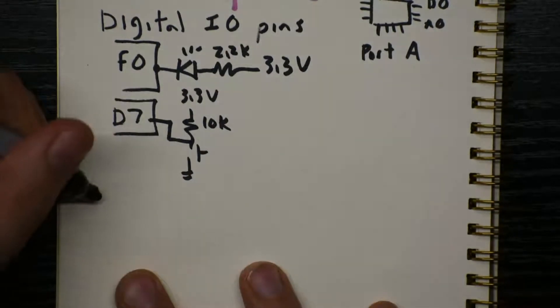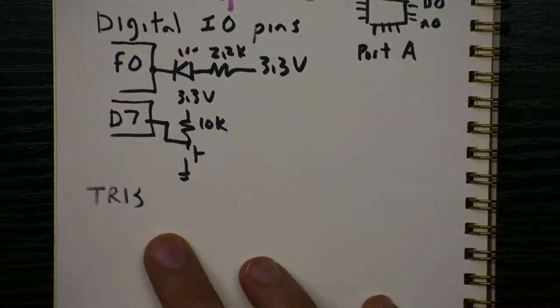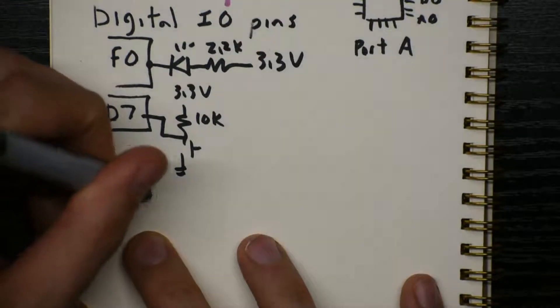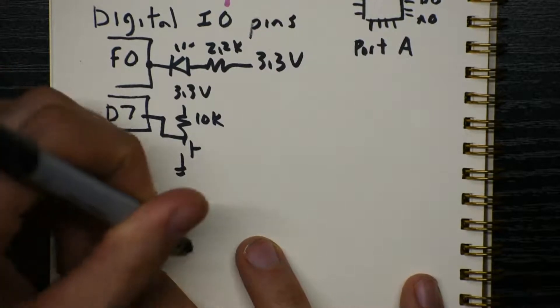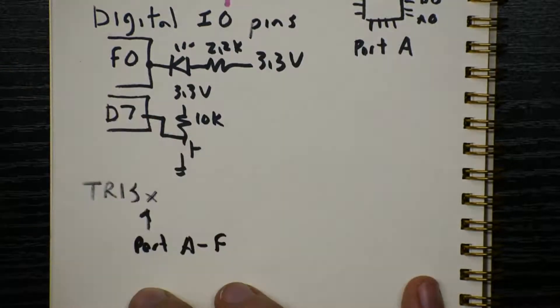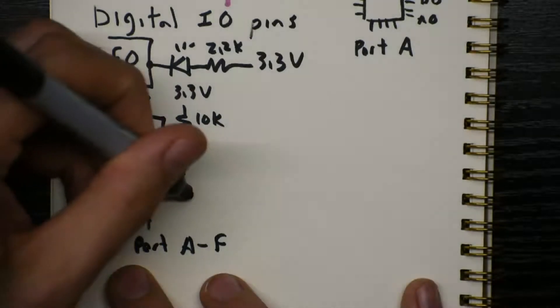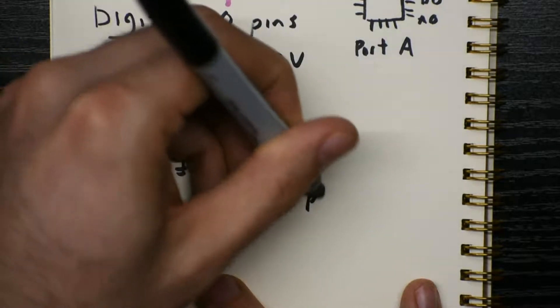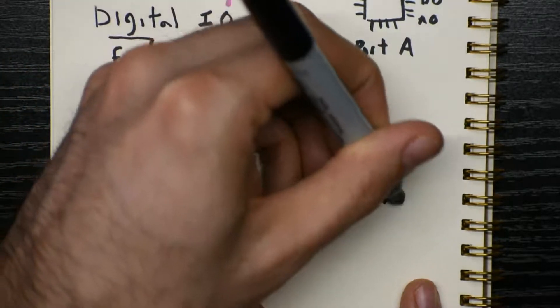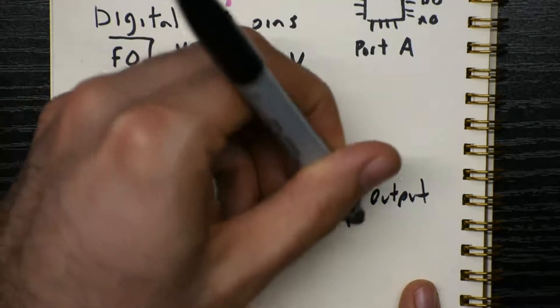The change notification should this pin be capable of generating interrupt when it changes. This is a little different than the external interrupt functionality. A change notification pin will call an ISR when it changes, but all of the change notification pins call that same function. So the first thing you do inside of that ISR is figure out which pin changed. Unlike the external interrupt pin, one pin controls one function, so it's a little faster.